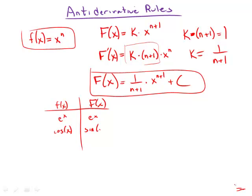If it is sine x, we get an antiderivative of negative cosine x. If it is secant squared x, what we get is an antiderivative of tangent x.